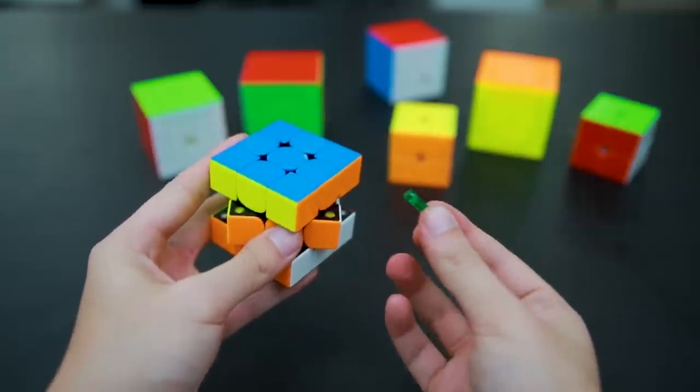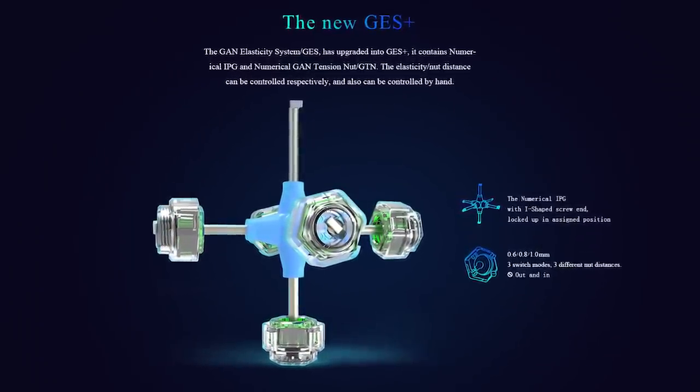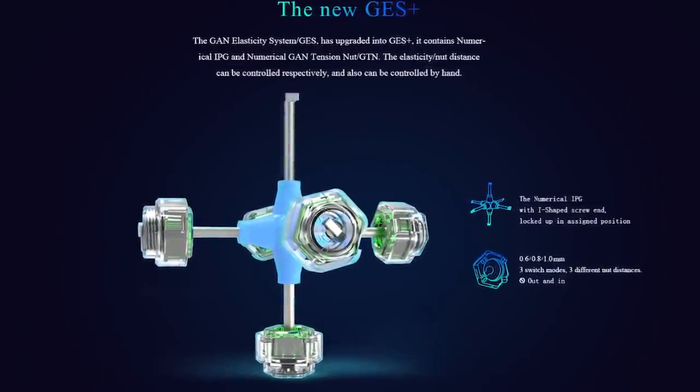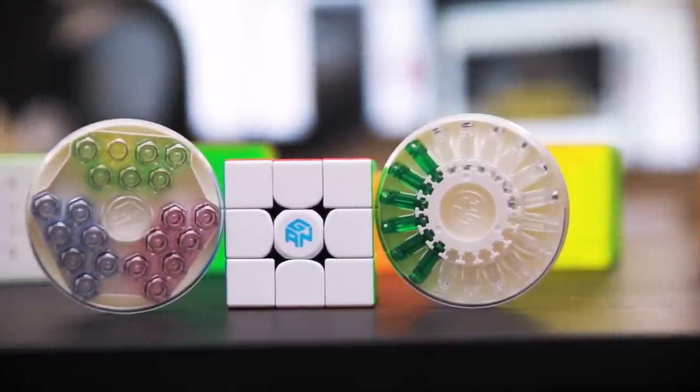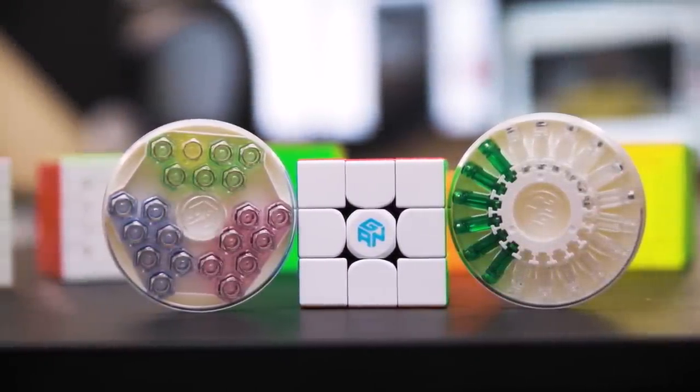The new Numerical IPG was also introduced to make tension in the cube easier and more consistent. The 356X is arguably the most customizable 3x3 you can buy and it also boasts top tier performance.